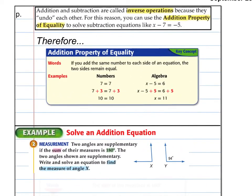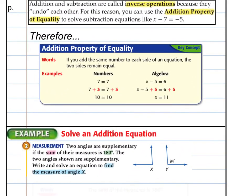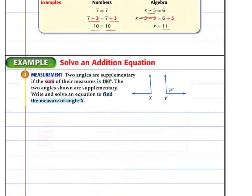So again, I just said addition and subtraction are called inverse operations because they undo each other. For this reason, you can use the addition property of equality to solve subtraction equations like this. What that means is if I add the same number to each side of the equation, the two sides remain equal. Add 3, I get to 10. Add 3, still get to 10. Put 5 on there, I get x alone. Put 5 over here, I get to 11. Whatever happens on one side happens to the other.